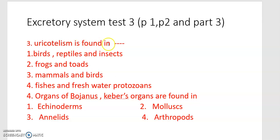Uricotelism is found in: first option — birds, reptiles, insects, frogs, toads; third option — mammals and birds; fourth option — fishes and freshwater protozoans.